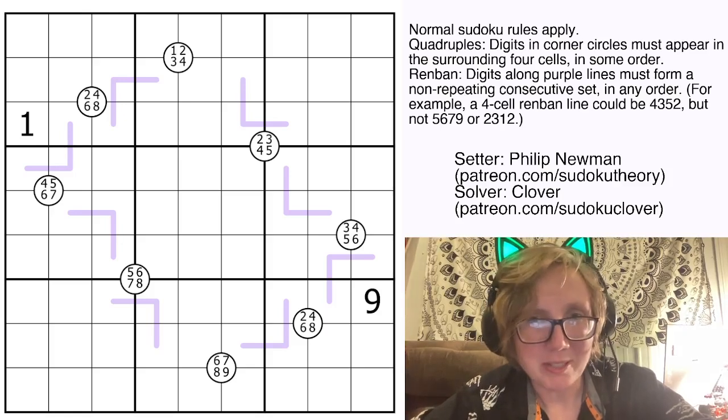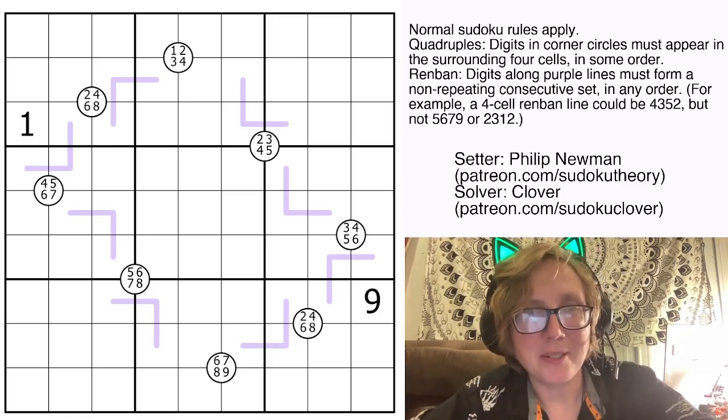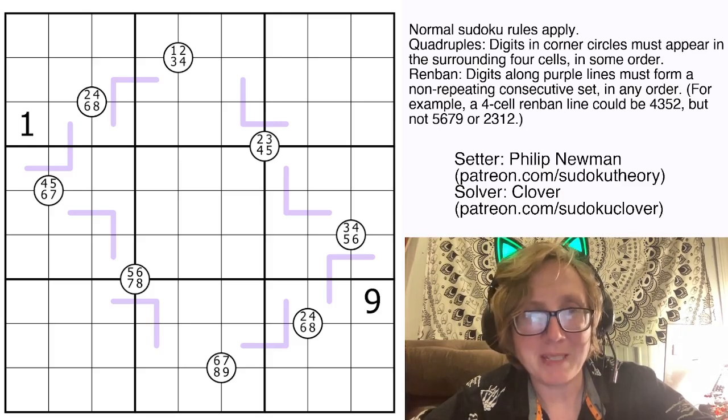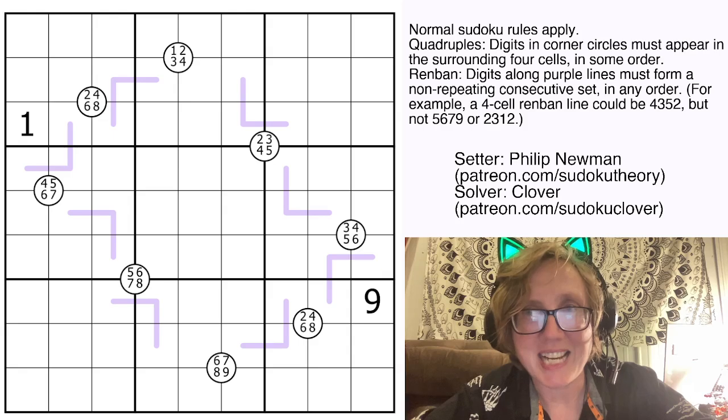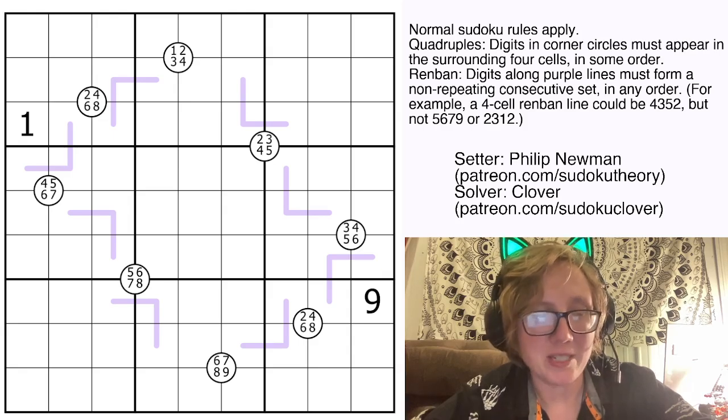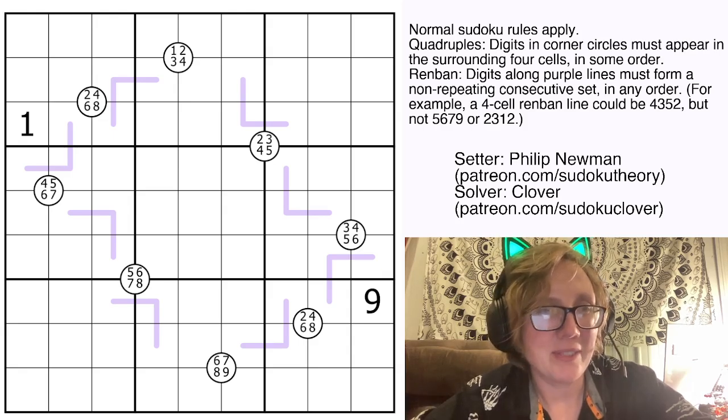Good morning, my friends. I'm Clover, and this is a puzzle called Quads and Trips by Philip Newman. This was originally posted in GAS on June 2nd, 2024. So let's have a look at it.